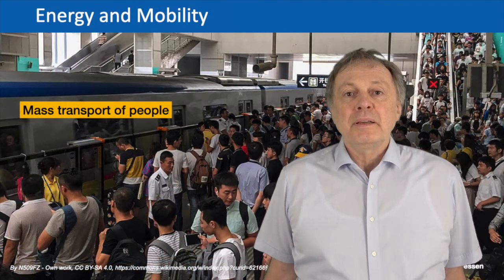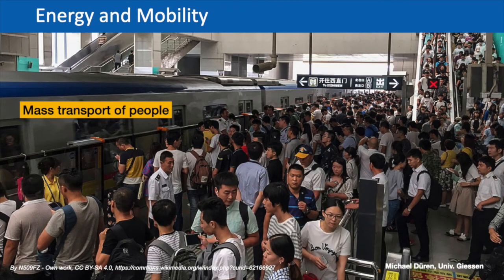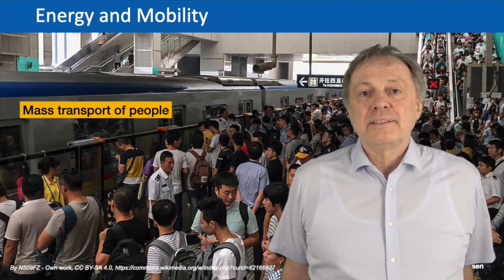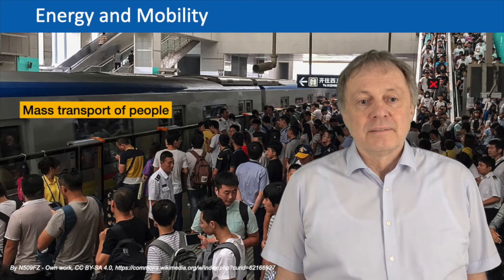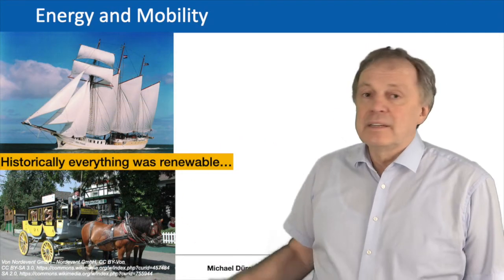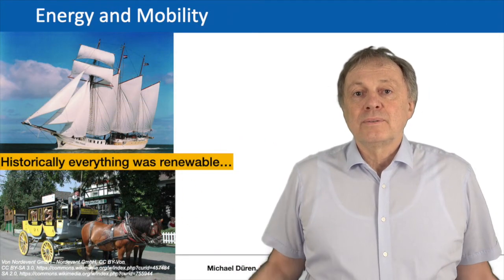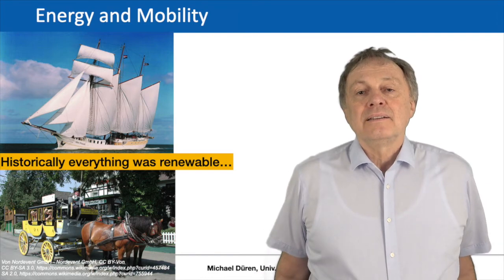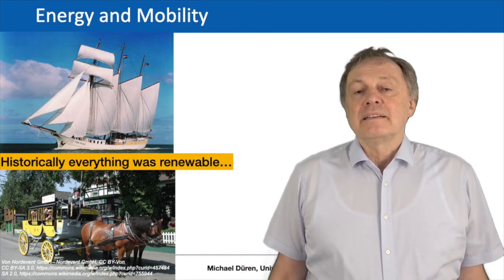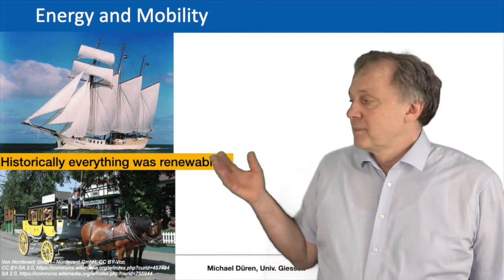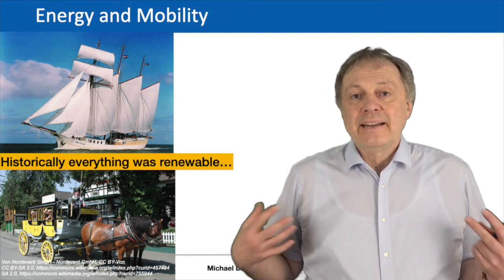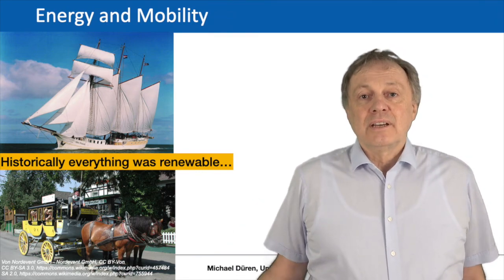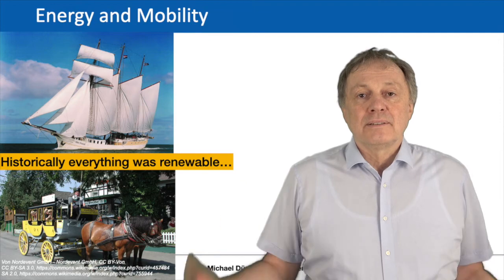For the mass transport of people, it's not only cars — especially in big cities you have subways and trains. The more people there are, the more means you need to avoid overcrowding. Going back in history, everything was renewable one or two hundred years ago. Mankind has used transport for basically 200,000 years, and one of the first things was using animals — especially horses — for riding and transporting people and goods.